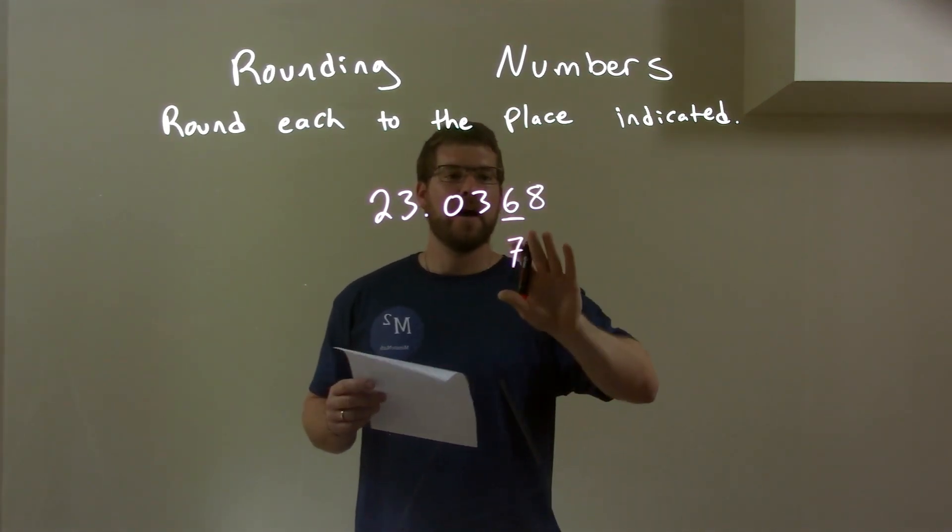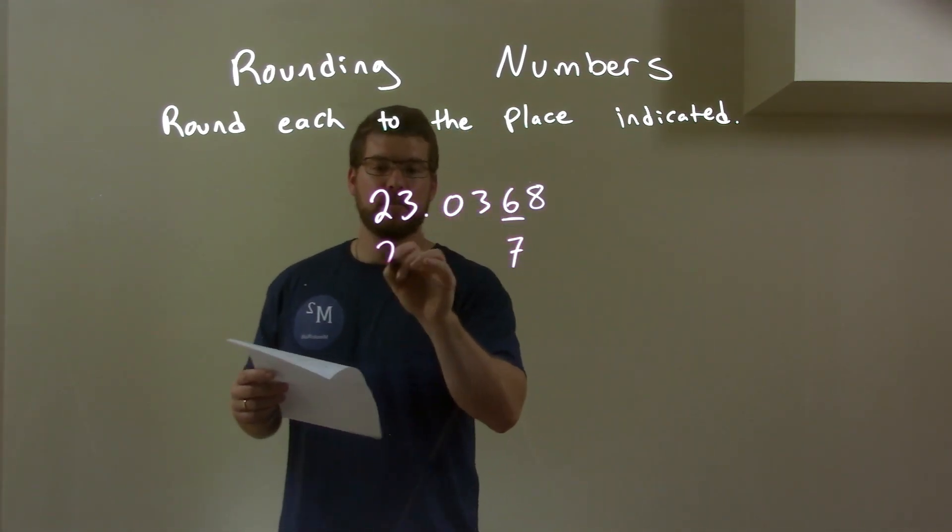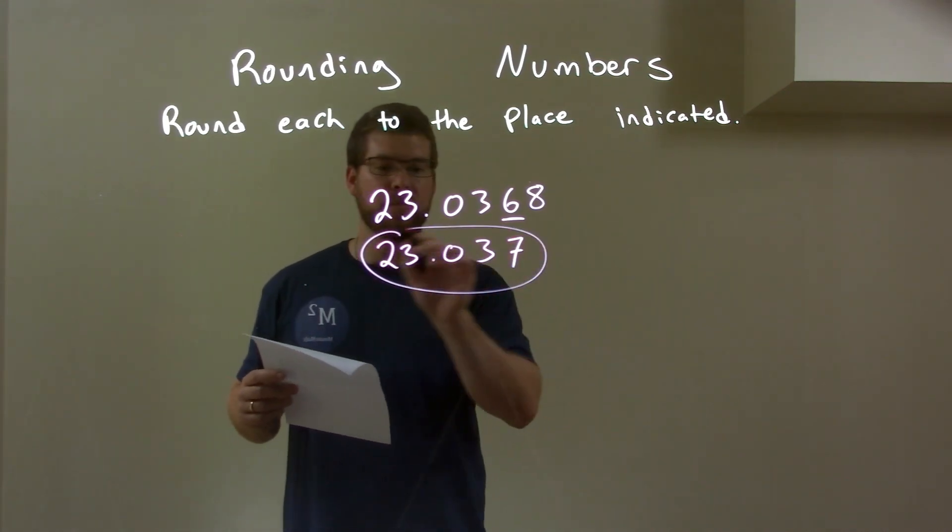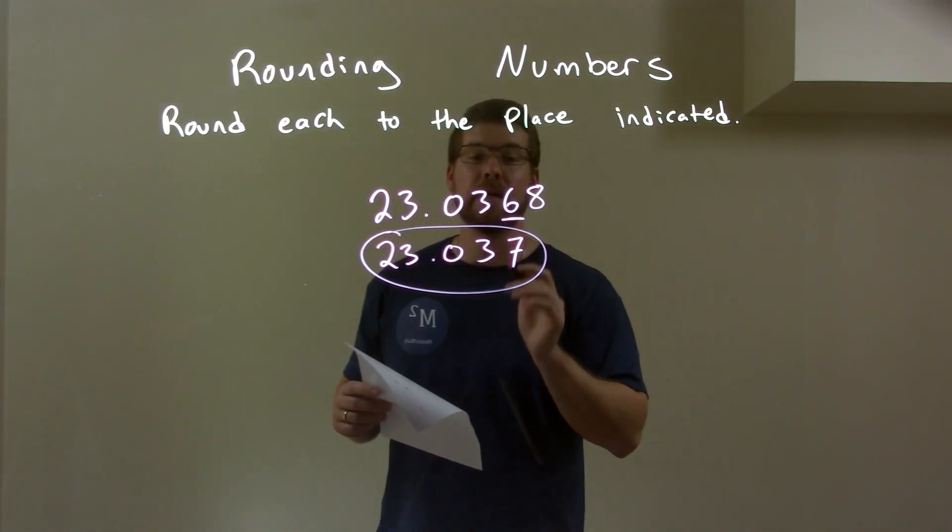Okay? I then get rid of that 8 and bring down everything else. 23.03. And here we have a rounded answer. 23.037.